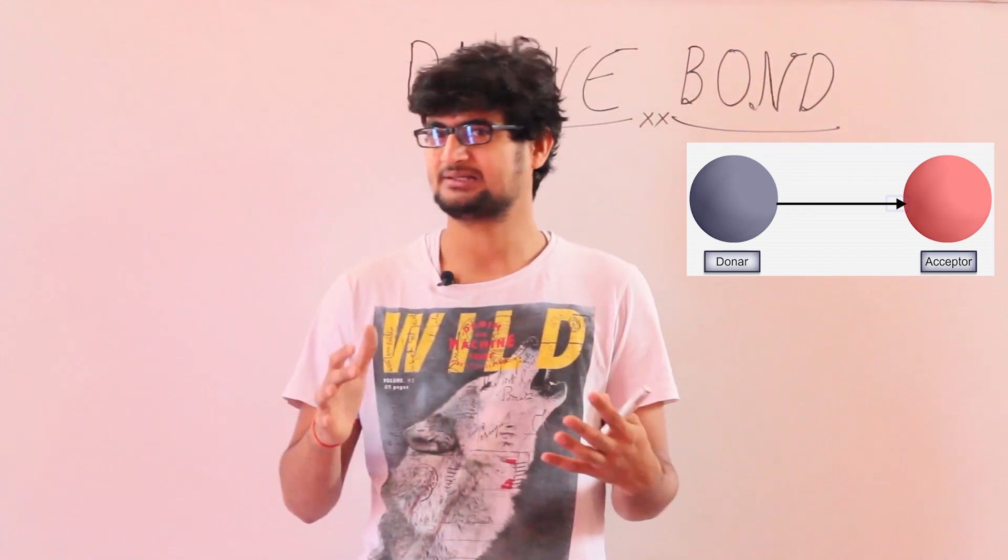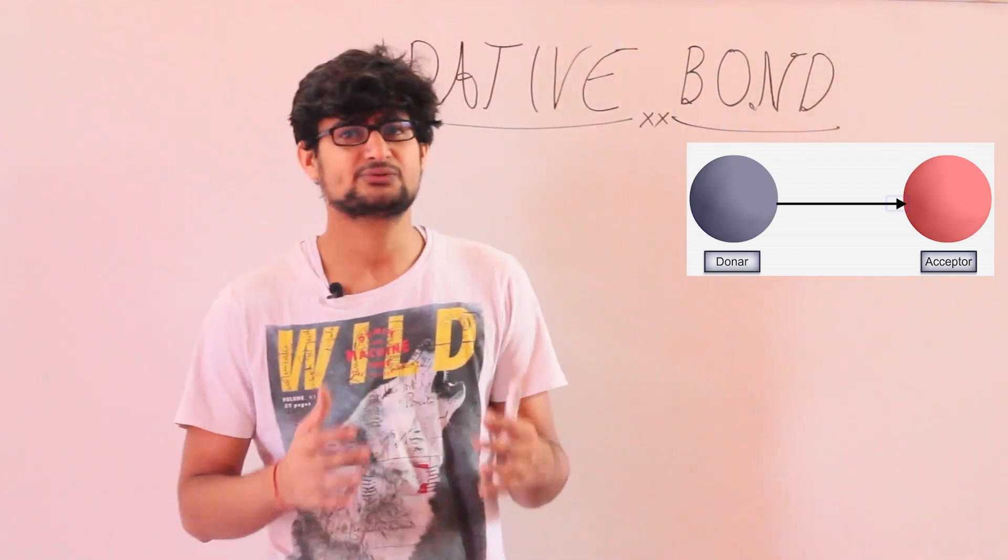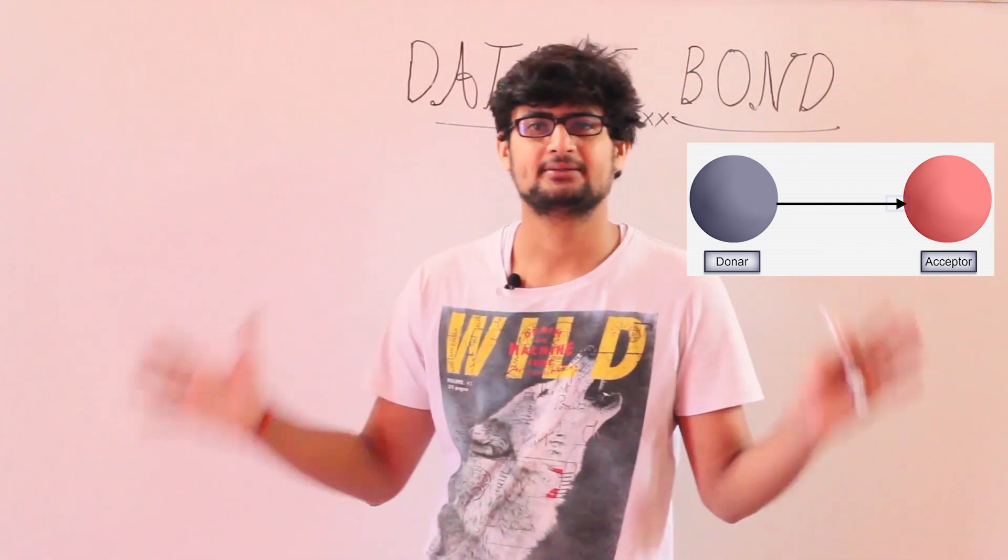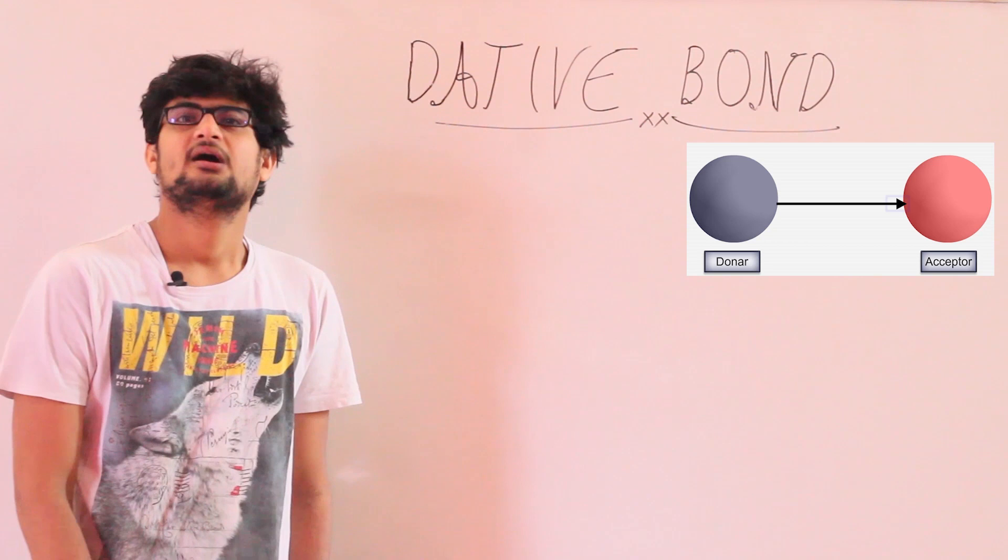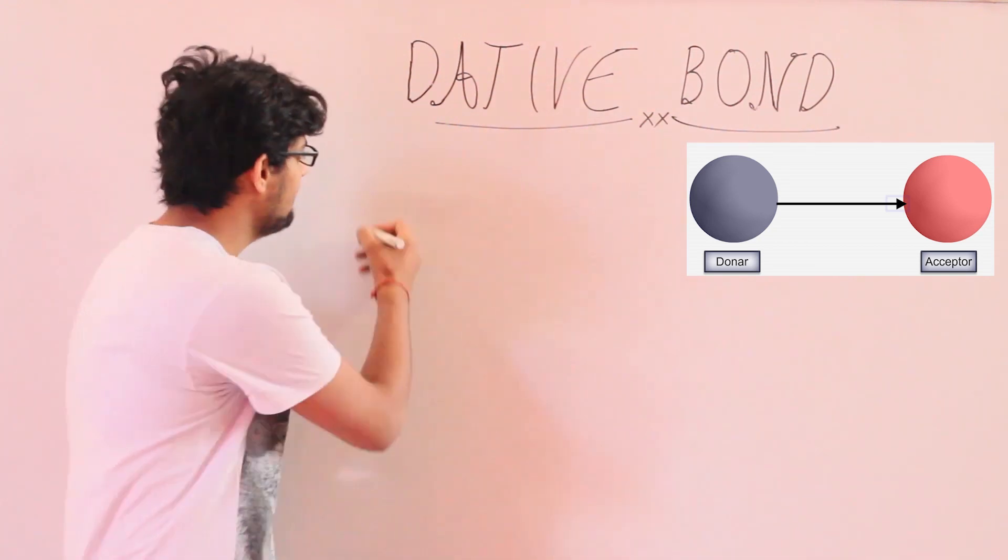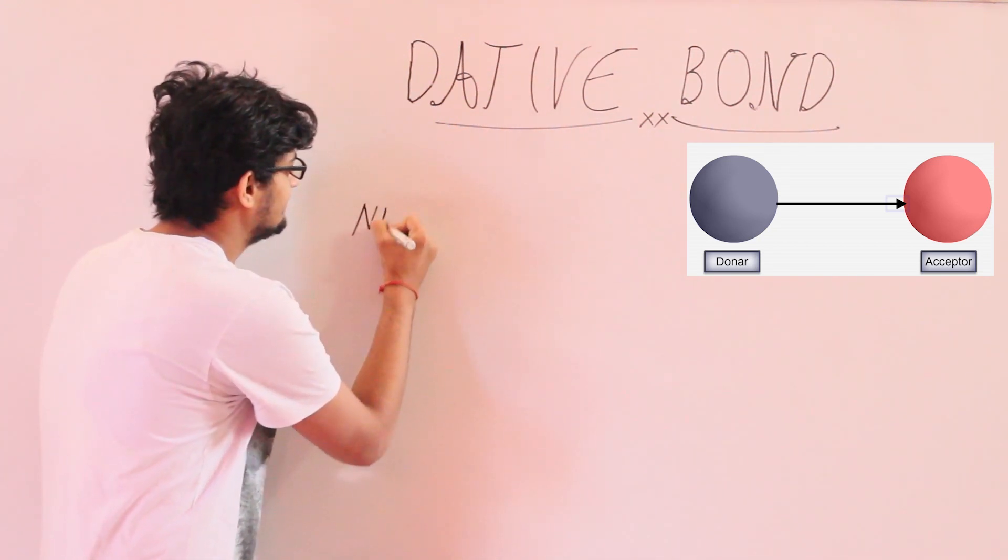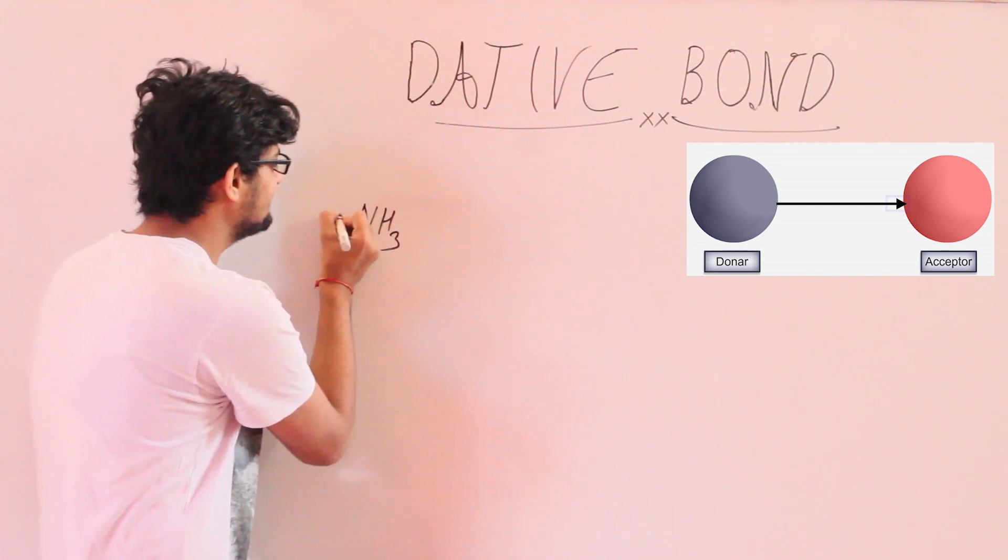Now we are going through some examples to understand this topic in a much better way. We are going to take ammonia and mix it with BF3 and let's see what kind of bonding is there.